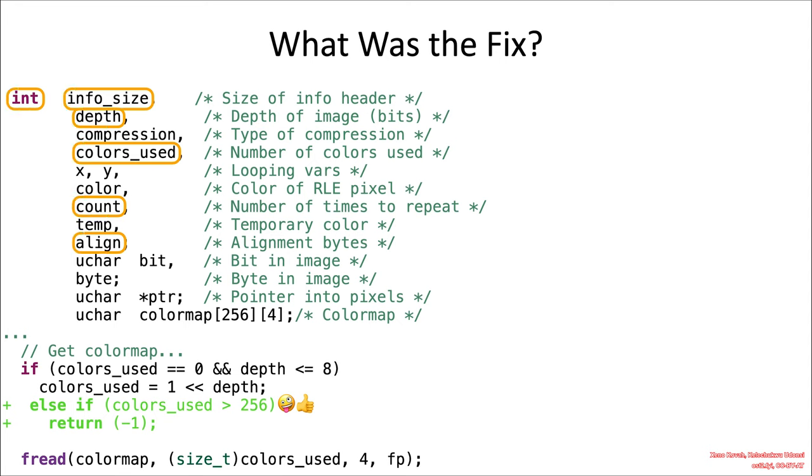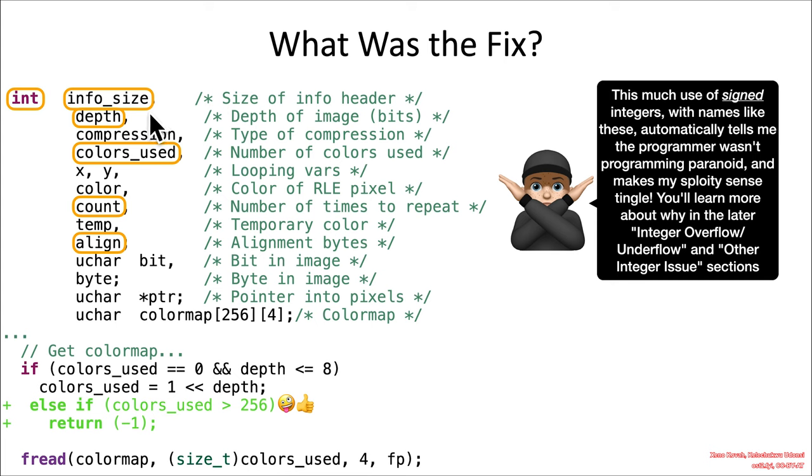And just generally, again, we'll come back to this in later sections of the class, but all of these sort of things right here, all being signed ints, that's a bad thing. And the names plus the fact that they're signed ints tells me it's a bad thing because you've got things that can never legitimately be negative. Things like sizes or the numbers of colors used. Can you ever have a negative number of colors used? No, you can't. Can you have a negative count? Well, maybe sometimes, but usually not. So the names tip you off. The fact that it's signed tips you off. And this is generally a tip off that the code base you're looking at has not been programmed paranoid and consequently will probably have the type of vulnerabilities that we learn about in this class. So remember, program paranoid because it's not paranoia if they really are out to get you.